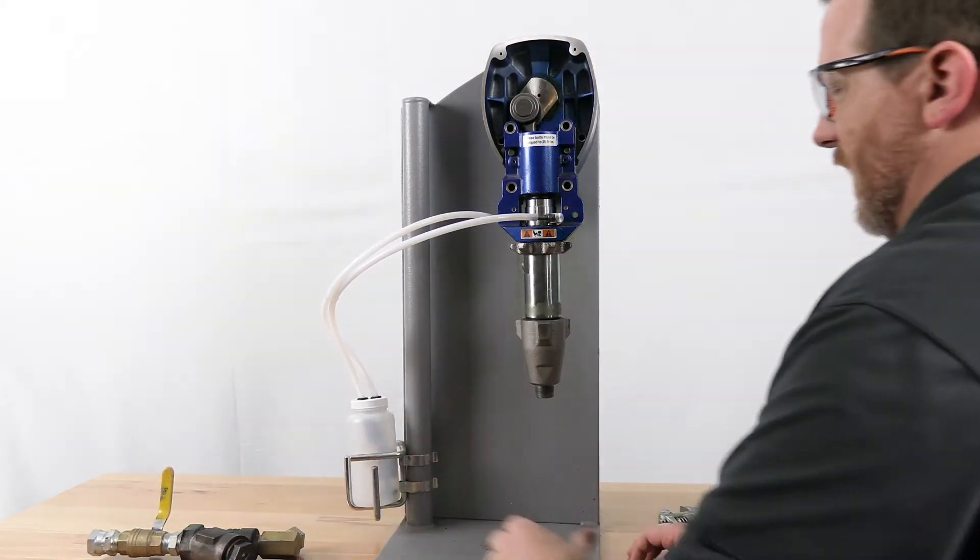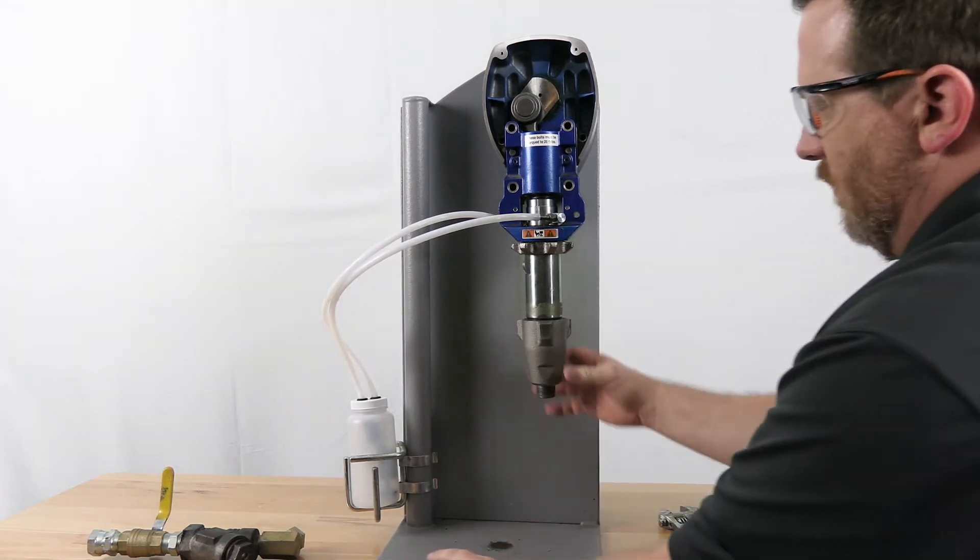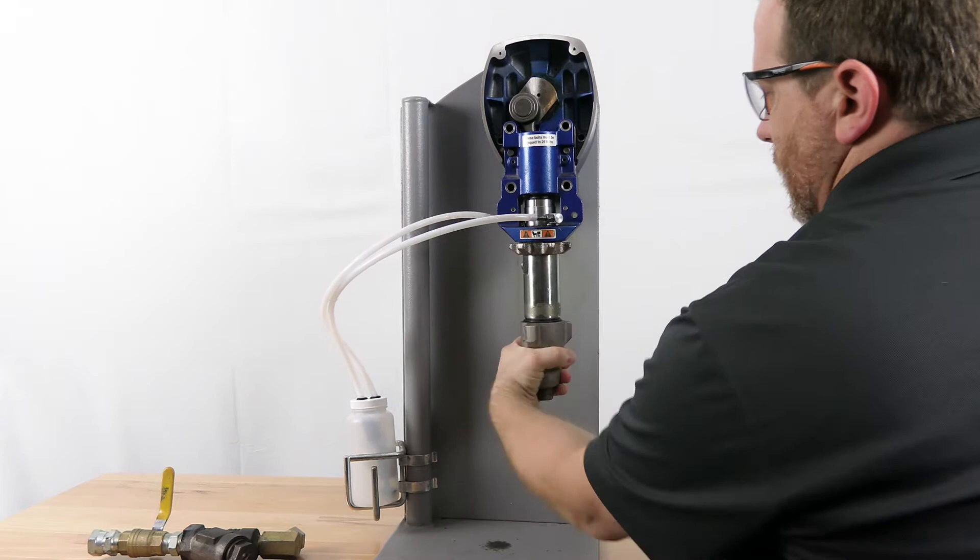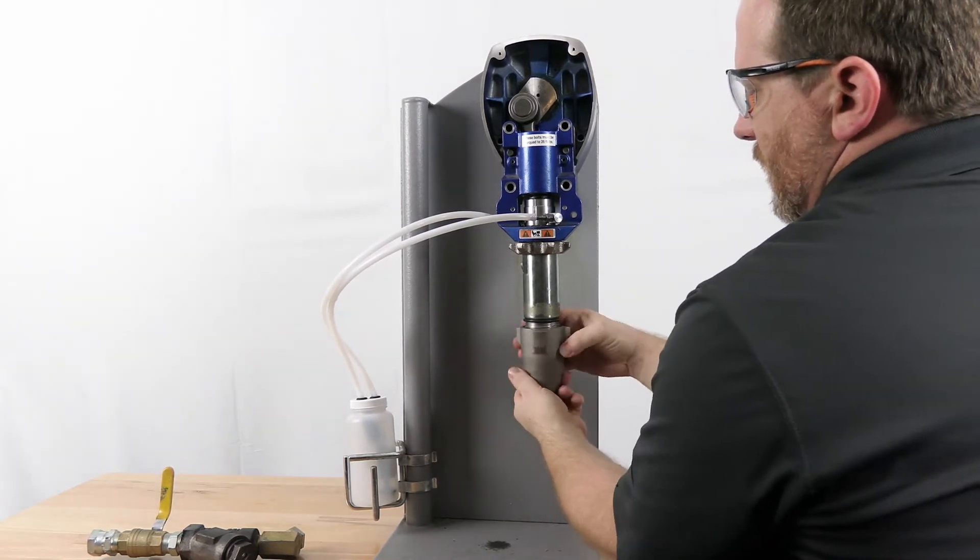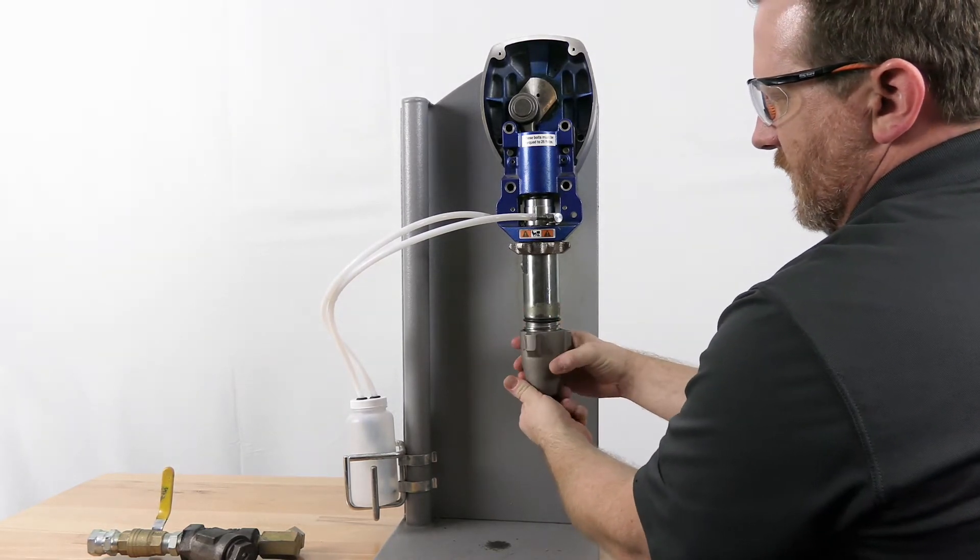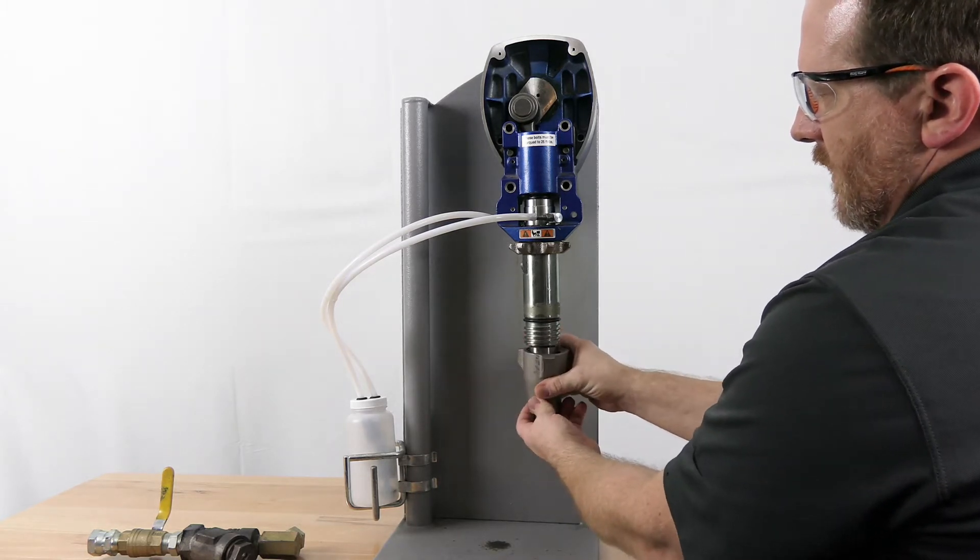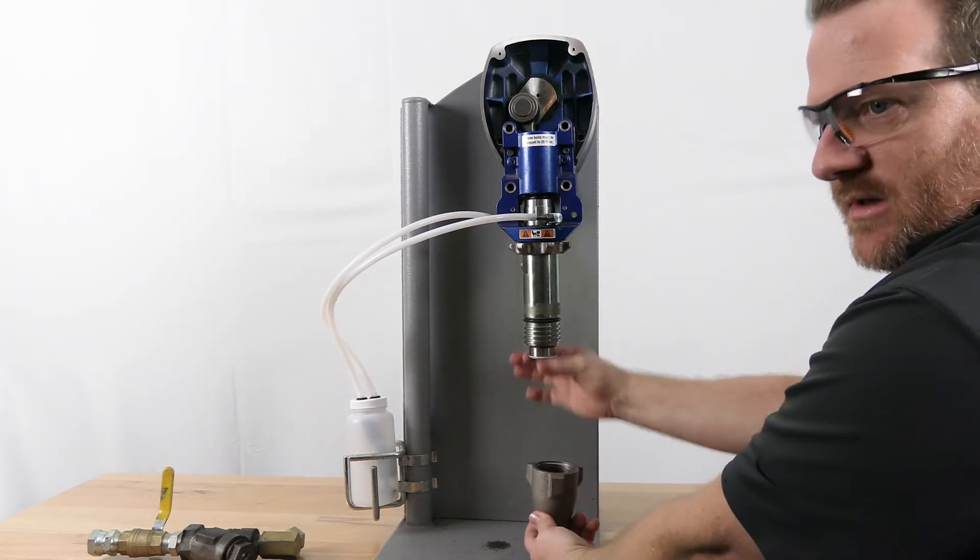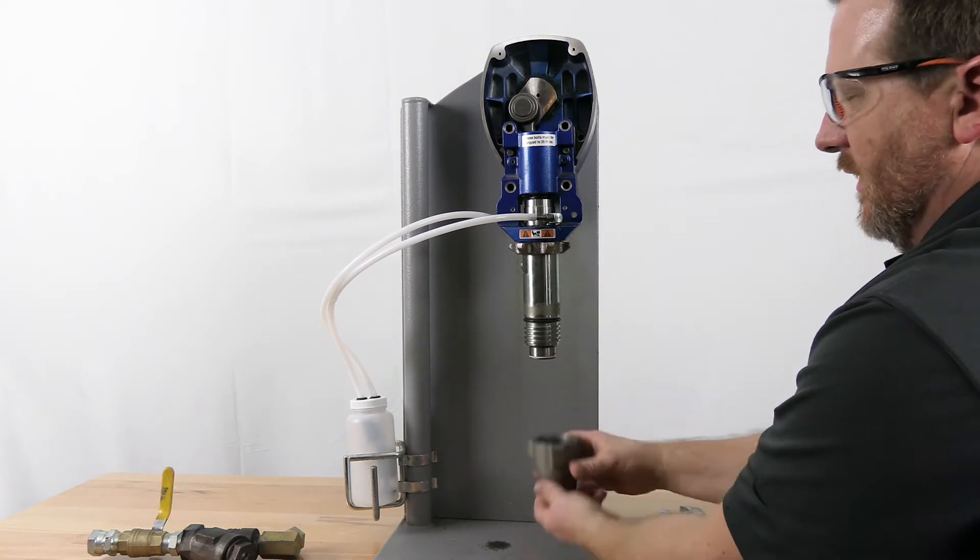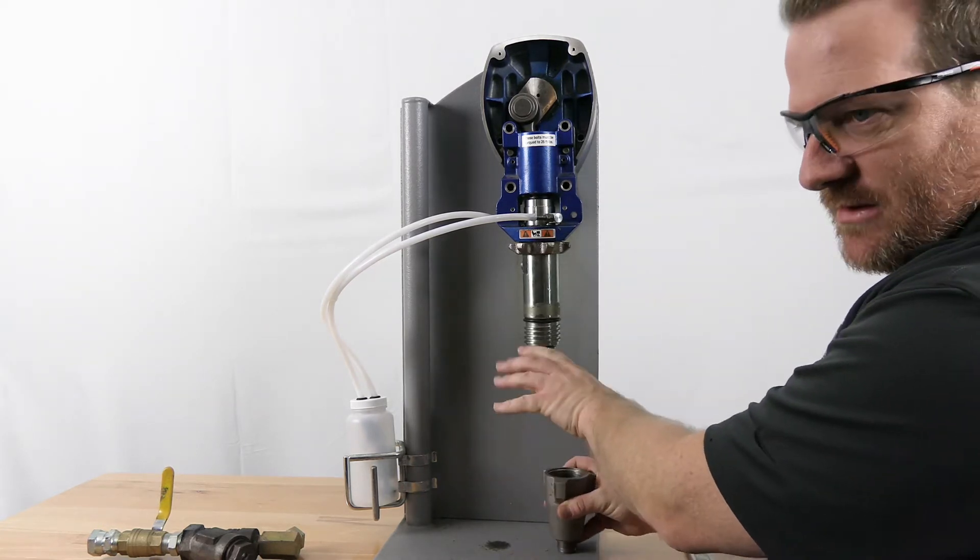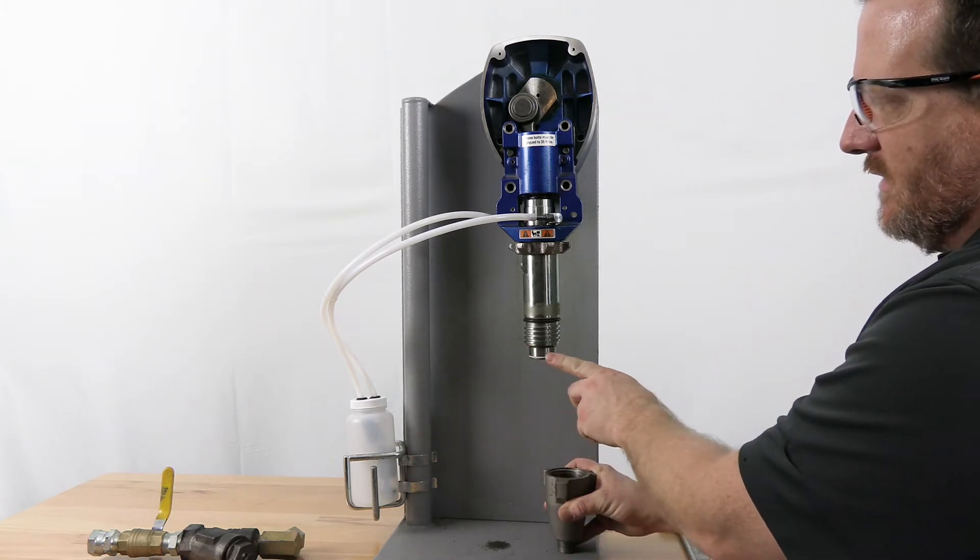Disconnect your supply line and set that off to the side. You're going to very carefully take this off. There's a sleeve inside of here. When you're taking this off, make sure that sleeve doesn't come with it. If it's stuck, try to wiggle this around and break it loose, but do not pull that sleeve out.